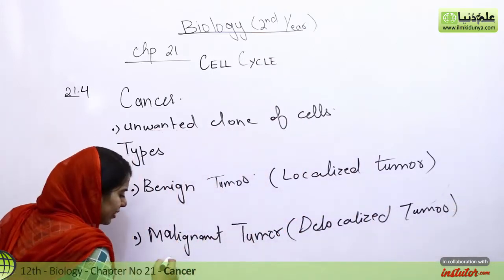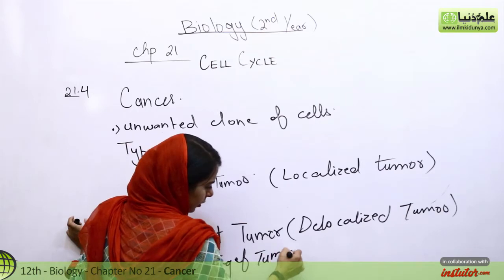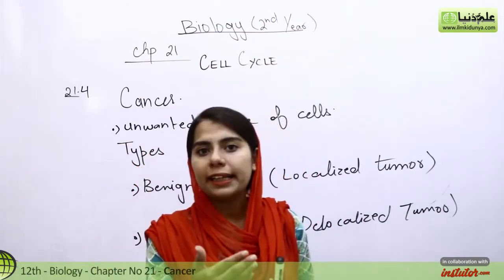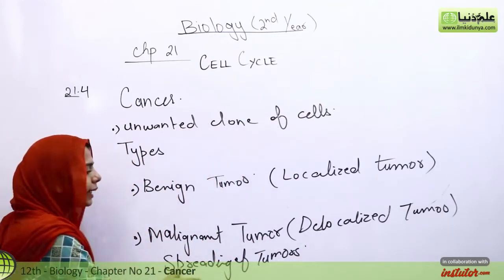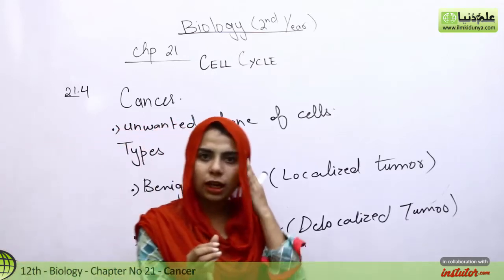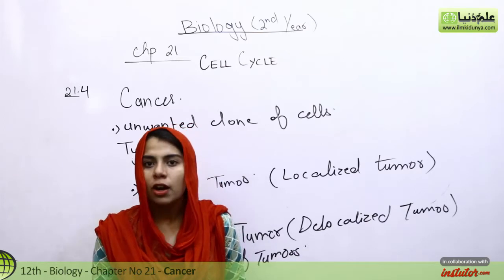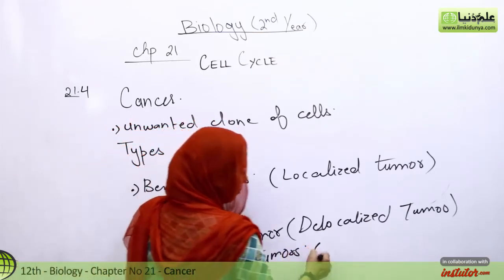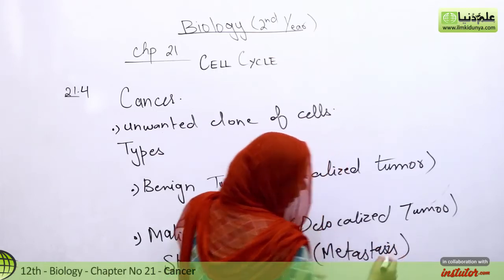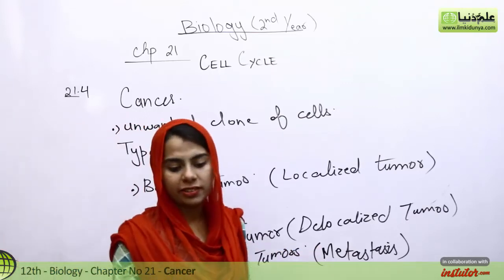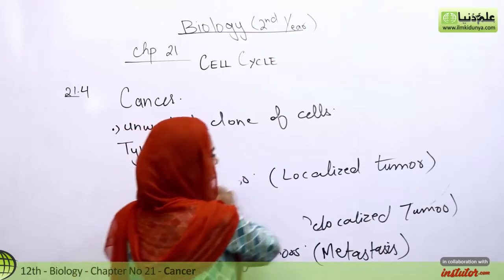Malignant tumor mein tumor cells spread out ho jate hain — yeh localized nahi hota. Tumor ek jagah se shuru ho kar puri body mein spread kar deta hai. This spreading of tumor is known as metastasis. Metastasis: the spreading of tumors throughout the body.